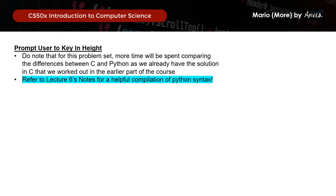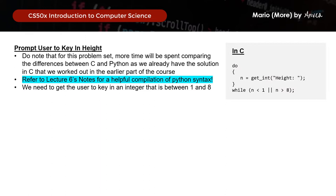For this step, we need to get the user to key in an integer between 1 and 8 inclusive. In C, we used a do-while loop. This means that we will keep running the prompt for the user to key in the input as long as the input received is either less than 1 or more than 8.